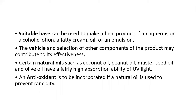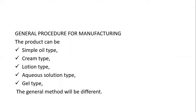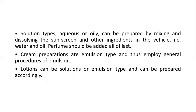The vehicle and selection of other components of the product may contribute to its effectiveness. Certain natural oils like coconut oil, peanut oil, mustard seed oil, and olive oil have high UV light absorption ability. Antioxidants are incorporated to prevent rancidity of the natural oils. General manufacturing procedure: solution types — aqueous or oily — are prepared by mixing and dissolving the sunscreen and other ingredients in the vehicle; perfume should be added last.